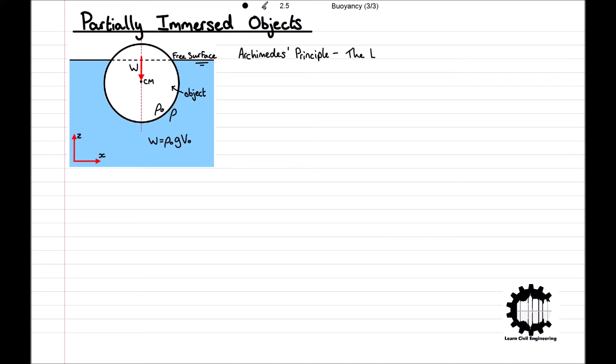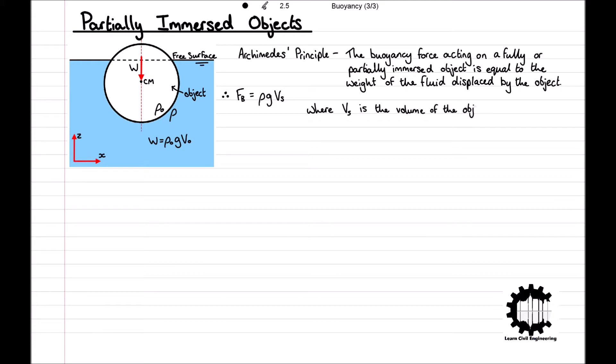Archimedes principle defines that the buoyancy force acting on a fully or partially immersed object is equal to the weight of fluid displaced by the object, and so the buoyancy force Fb = ρgVs, where Vs denotes the volume of the object immersed in the liquid, below the free surface.